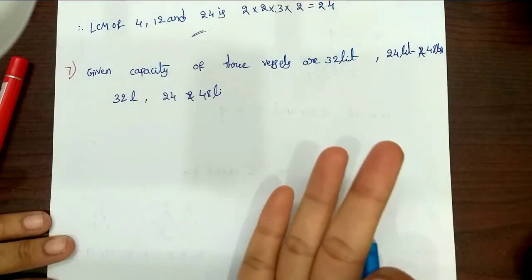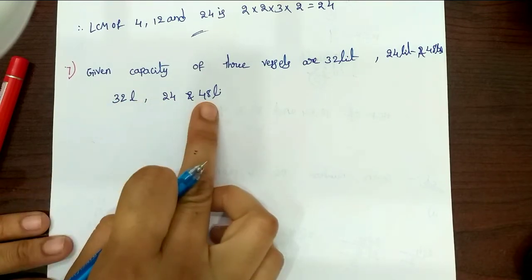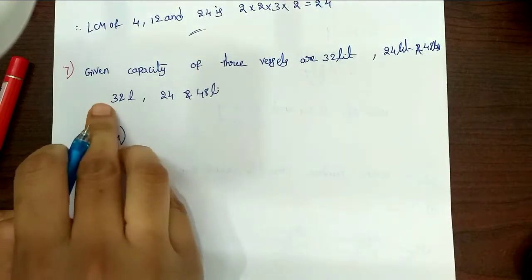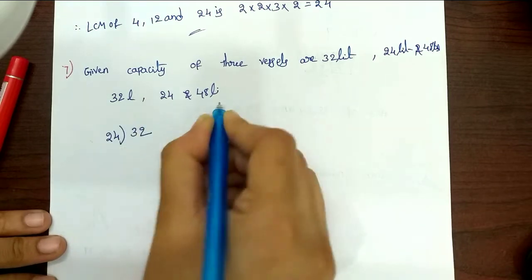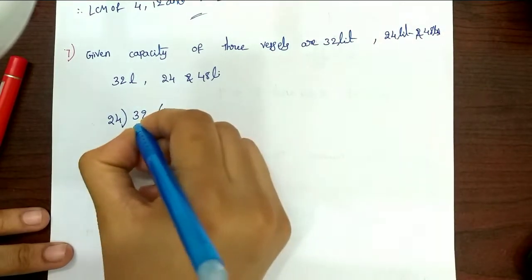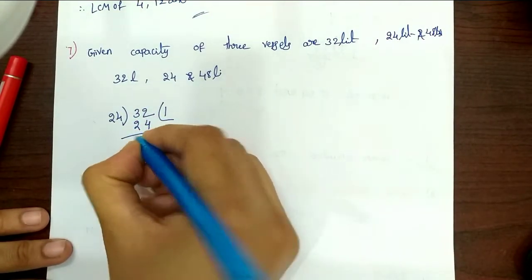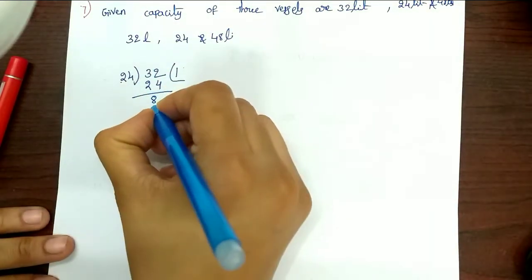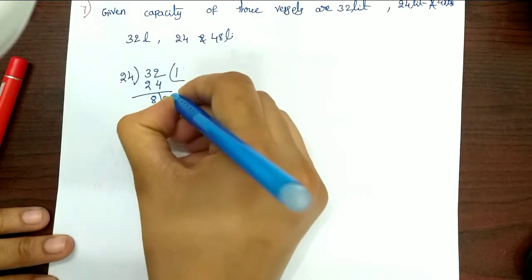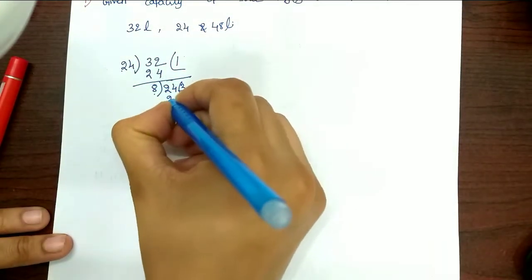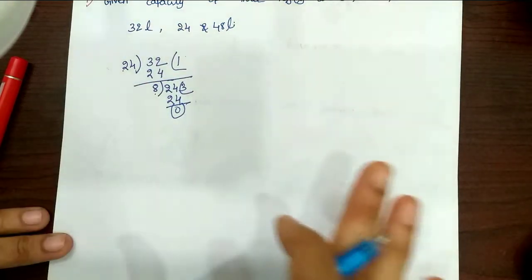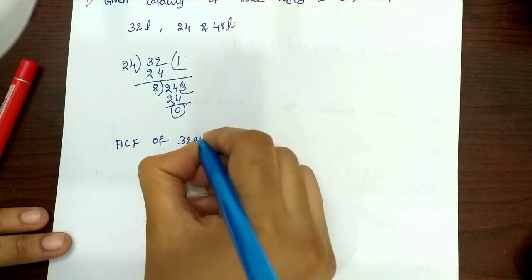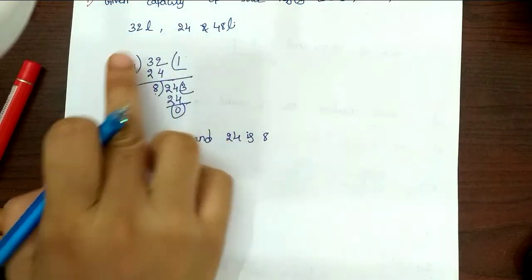First, we have the smallest number and the highest number. We have 24 divided. 24 once 24. If you divide 32 by 24, it will be 8 remainder. Then if you give the divisor 8, we divide 24 by 8. Remainder 0. HCF of 32 and 24 is 8.